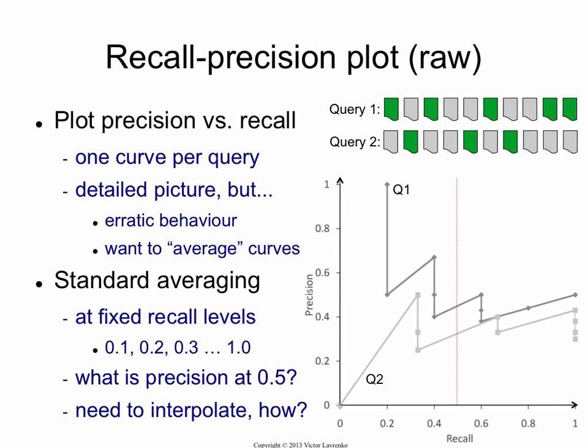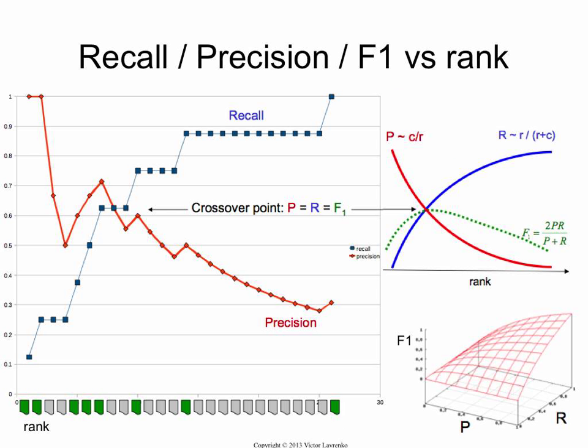The way you do the combination is you plot precision against recall. Why is that interesting? Because you know that as a function of rank, precision is always going to go down, and recall is always going to go up. So the tendency is not particularly interesting — so let's just plot one against another.